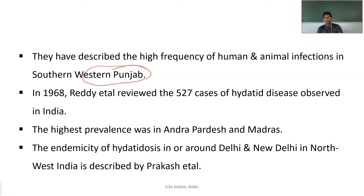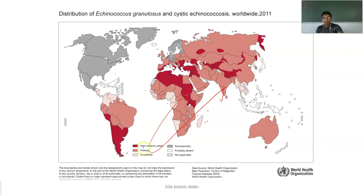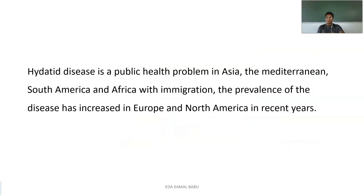In and around Delhi, New Delhi, and northwest India, the disease was mainly described by Mr. Reddy Prakash et al. Coming to the worldwide distribution, according to the 2011 WHO census, the bright red areas on the map indicate the highest endemic areas, the light red indicates the present situation, and the other shaded areas are the suspected zones.